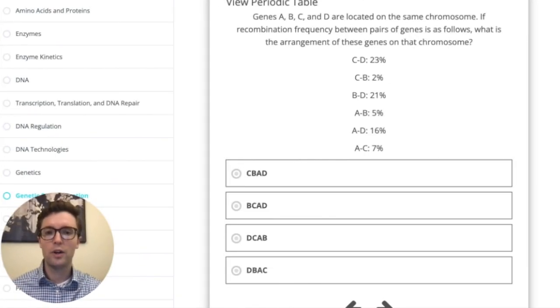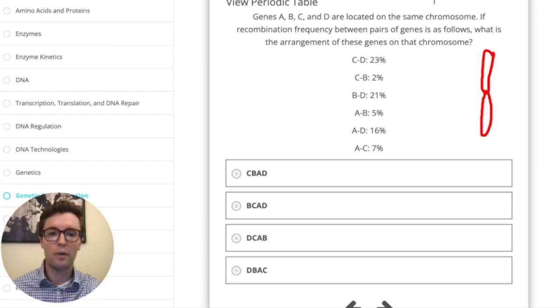Now that we know that recombination frequency and the distance between genes are directly related, let's draw a little diagram here to help us answer this question. So I'm going to draw a little chromosome. I apologize, I'm not the best artist, but it'll work for our mapping. Now let's look at these recombination frequencies, realizing that the recombination frequency that is largest indicates the largest distance between genes. And so we see here that that's C and D. So for simplicity's sake, let's put them on the ends of the chromosome here because we know that they are the furthest apart.